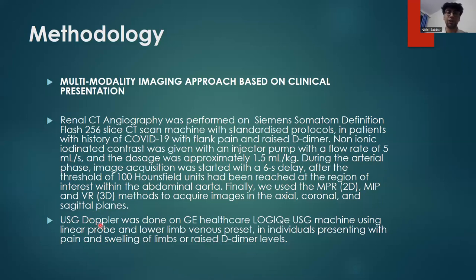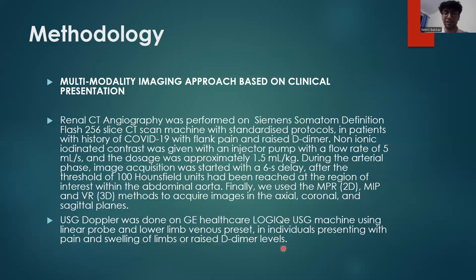To detect deep vein thrombosis, USG Doppler was performed on a GE Healthcare ultrasound machine using a linear probe and lower limb venous preset, in patients presenting with pain and swelling of the limbs and raised D-dimer levels.